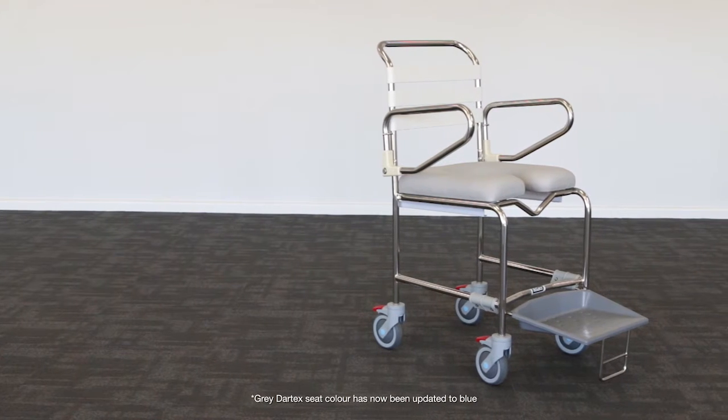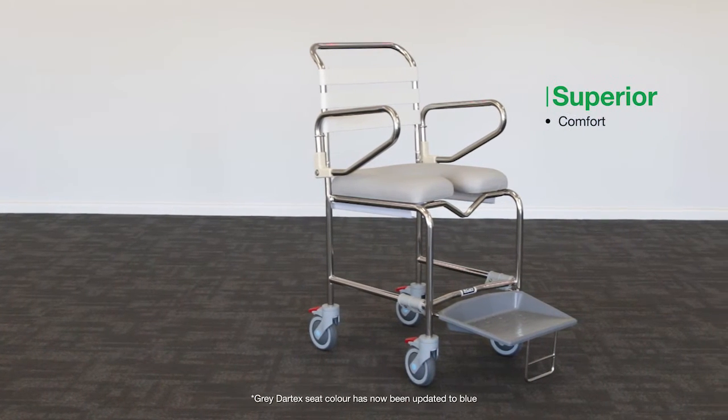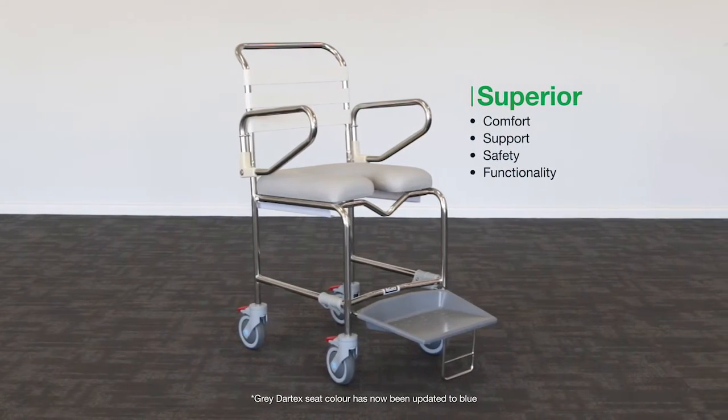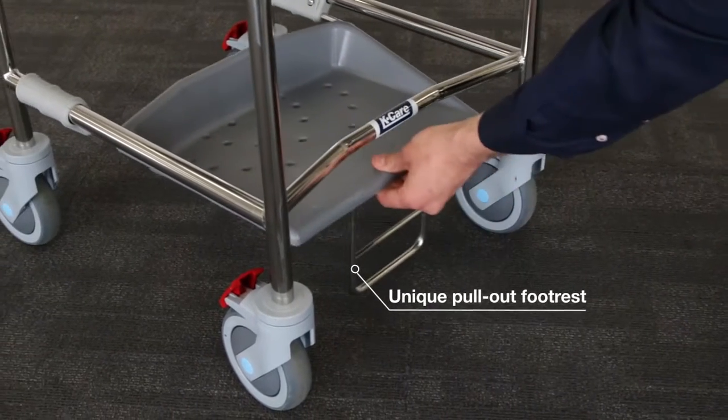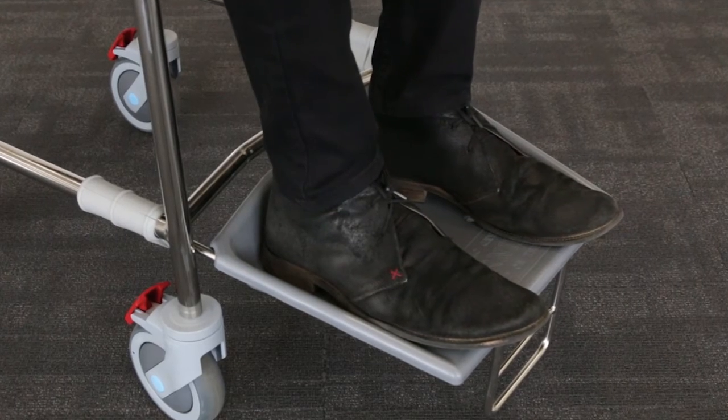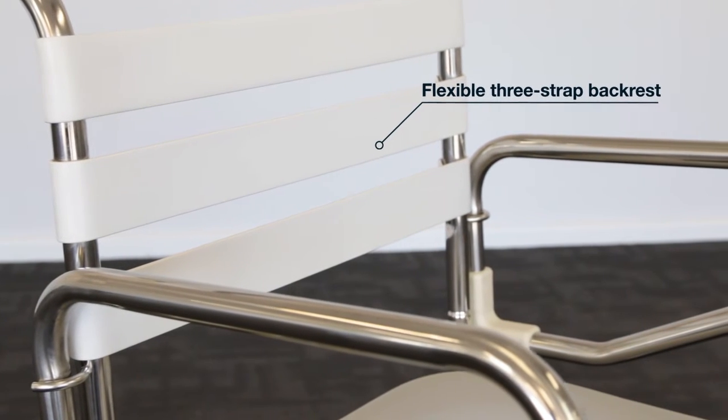The mobile shower commode range from K care delivers superior comfort, support, safety, and functionality. The sliding footplate model features a unique pullout footrest style allowing for unobtrusive transfers. A flexible three strap backrest allows for optimal water flow in the shower.